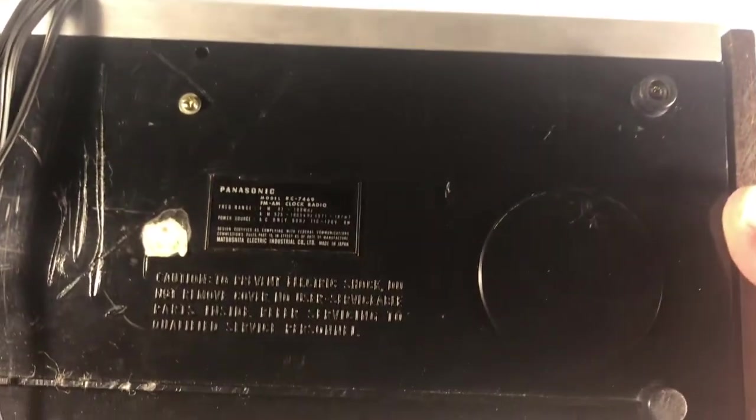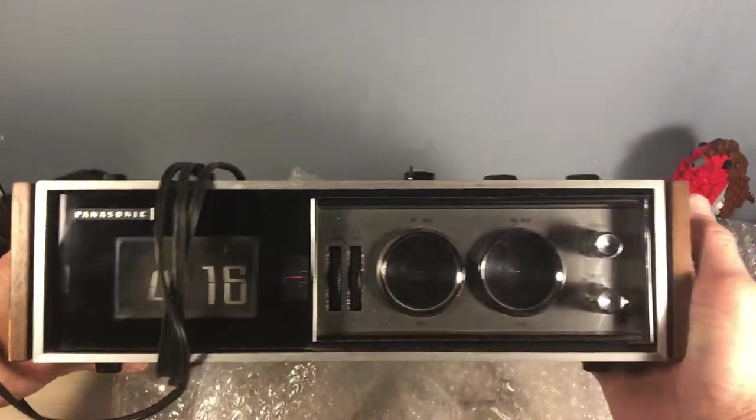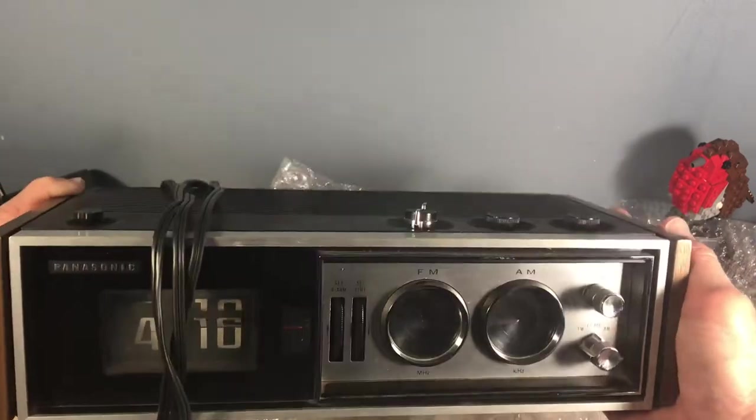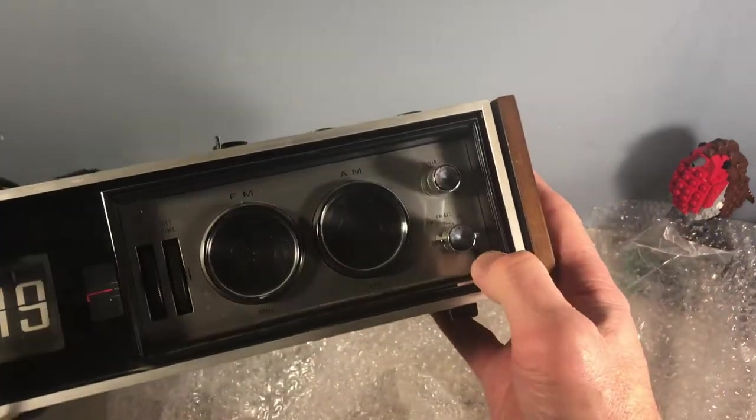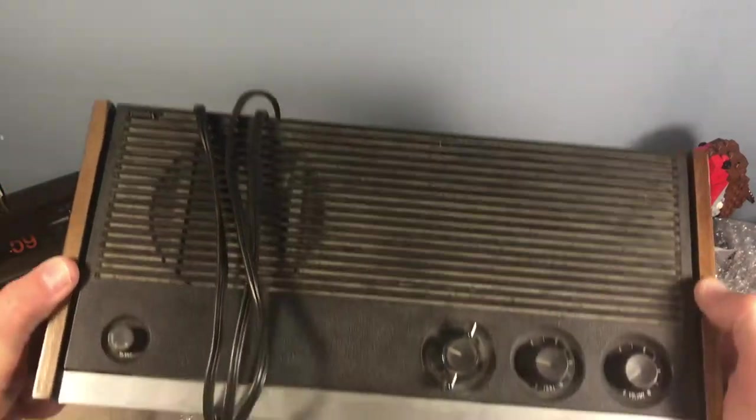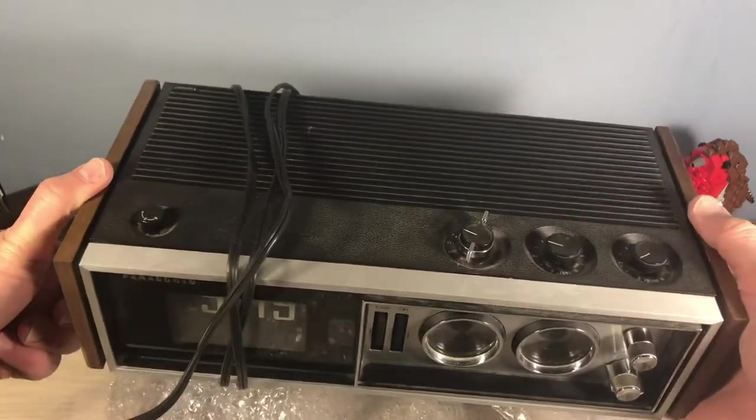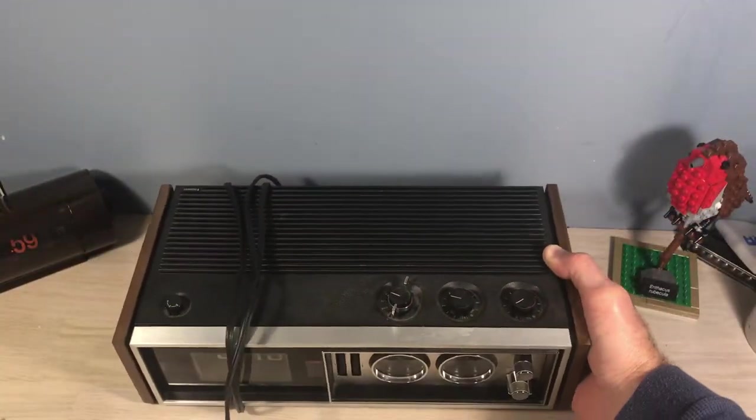This is the Cameron model RC 7469. They named their clocks back in the day. This clock is named Cameron. You can see it's kind of dirty here. This is the National Panasonic version. That little symbol down there indicates that.